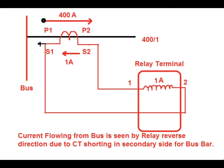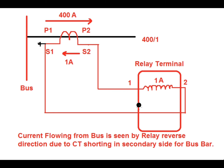Now consider current in the primary side flowing from P1 to P2 — that is, current flowing out from the bus towards the feeder. Since current flows from P1 to P2 in the primary, the CT secondary current direction will be from S2 to S1. This causes current to flow towards the relay terminal from terminal 2 to 1 direction. Since the current flows from terminal 2 to 1, the relay senses this as a reverse direction. So current flowing out from the bus is sensed by the relay as reverse direction.